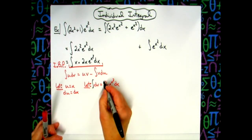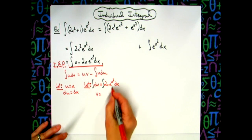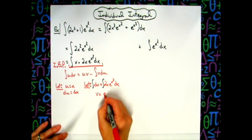And then I need to integrate both sides there. Integrating here, I'll have a v. Integrating here, I'm going to have e^(x²).